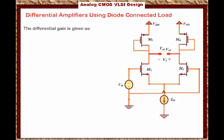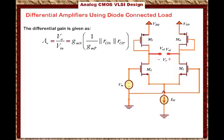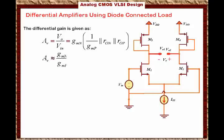The differential gain Av equals Vout over Vn, where Vout is the differential output voltage and Vn is the differential input voltage. This equals GMn times (1/GMp in parallel with Ron in parallel with Rop). Because 1/GMp is much smaller than the small-signal output resistances Ron and Rop, this simplifies to approximately GMn over GMp.